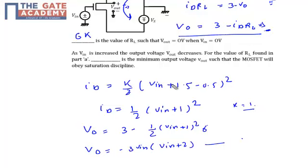Solving this expression, V0 equals minus 3·VIN·(VIN + 2). This is Equation 1.